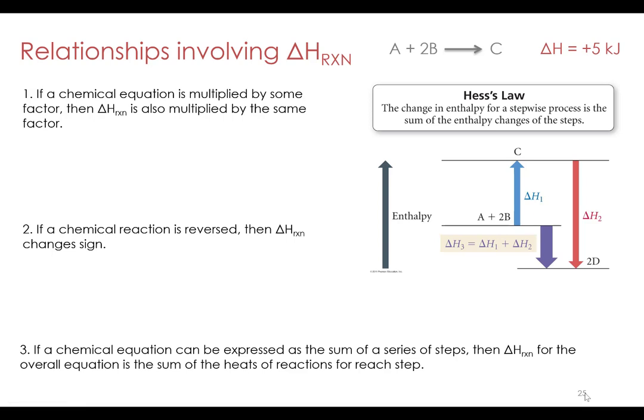It turns out that we can calculate the enthalpy change of a reaction given information about other reactions that we can use as place markers about where the enthalpy change or potential energy change of a reaction is going. This method is called Hess's Law, and what we can do is use some tricks to manipulate equations so that we'll be able to build an overall equation from a series of related equations.